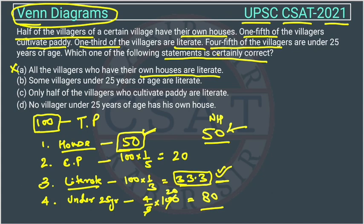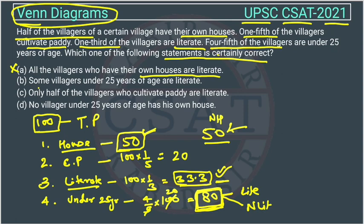Now the second statement: some villagers under 25 years of age are literate. Out of the 80 who are under 25, some may be literate and some will not be literate. The statement says 'some', not 'all', so this is possible. This statement is correct — option B.